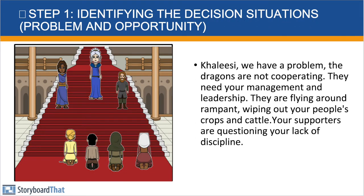The first step is to identify a problem. Khaleesi already has the support of her people and is getting ready to demand a battle for the Iron Throne to make her the ruler of all the lands. Her people come to her and say, 'Khaleesi, your dragons are going crazy. They're burning down our crops. They're eating our goats. They're messing all of our stuff up. We need you to do something about this because we're beginning to think that you're not the best leader and that you're unable to control your dragons. We can't just have your dragons running all over the place, eating all the cows, burning down all our crops.' So the Khaleesi realizes that there is an issue now.